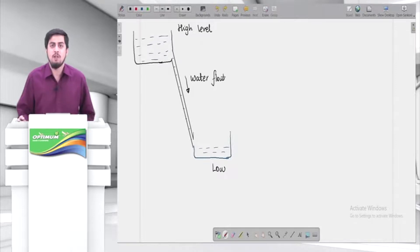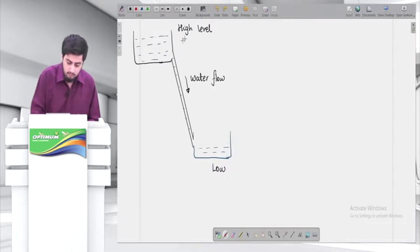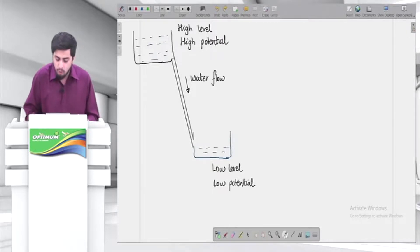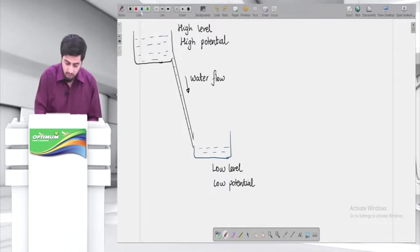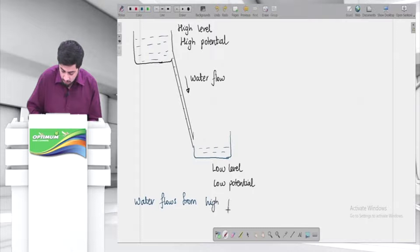Now, electricity ki language mein, level is called potential. So basically what is happening? This is high potential. And this is called low potential. So what is seen guys? Can I say water is flowing from high potential to low potential? So I can write down a note: water flows from high potential to low potential.